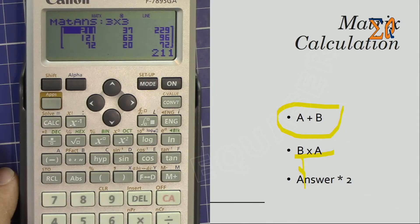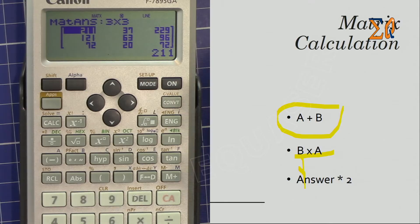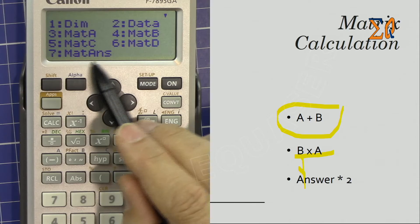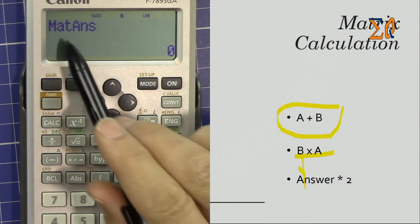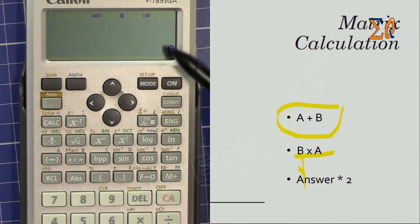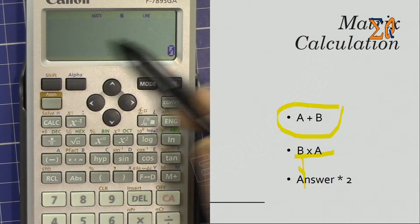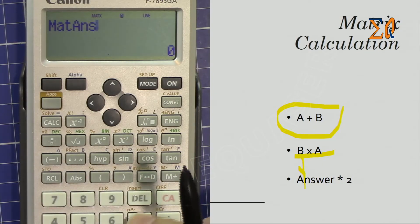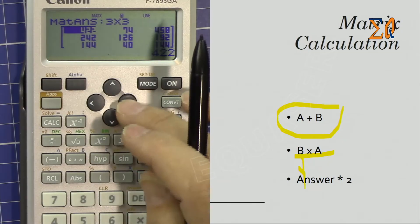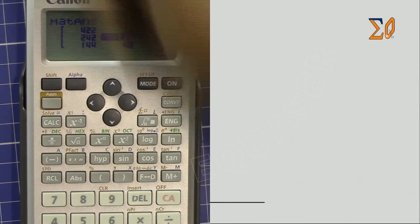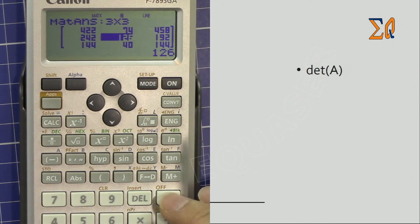The result of the last calculation is stored in matrix answer. To use it in a new calculation, press clear all, then Apps, and number seven for matrix answer. You can then perform further operations — for example, multiply matrix answer by two to scale all values by two.